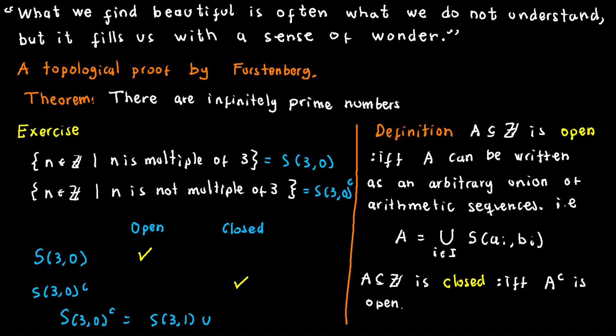Intriguingly, the complement of S(3,0) can be expressed as the union of S(3,1) and S(3,2), constituting an open set due to the union of two arithmetic sequences.